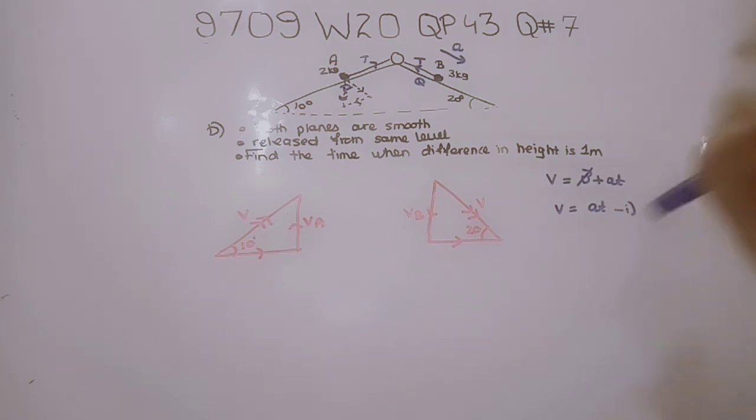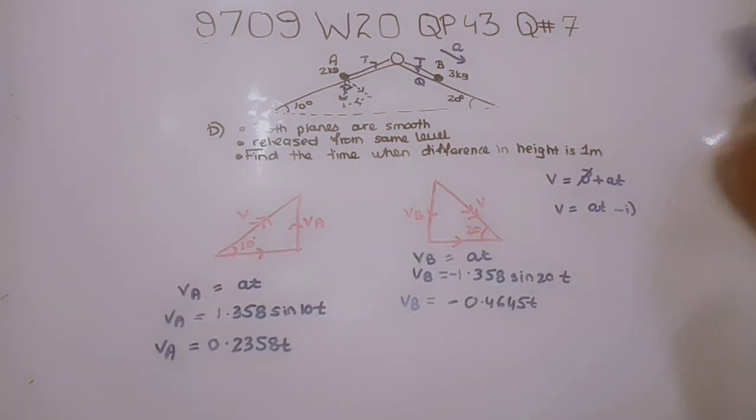A suitable equation is V equals U plus AT, where initial velocity U is 0. For VA, acceleration is 1.358 and the vertical component is sin 10, so VA equals 0.2358T.